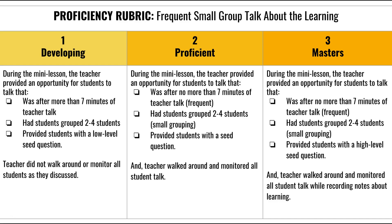During the demonstration lab, you'll present a 10-minute mini-lesson in which you model frequent small group talk about the learning. You will receive feedback based on the proficiency rubric you see on the screen. To earn credit for this course, participants must score at the proficient or master's level.